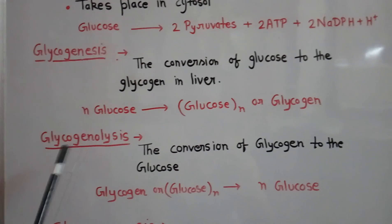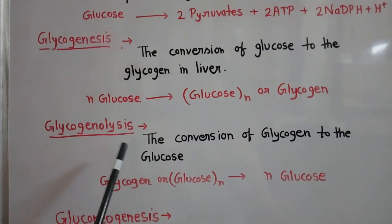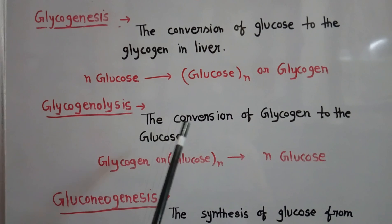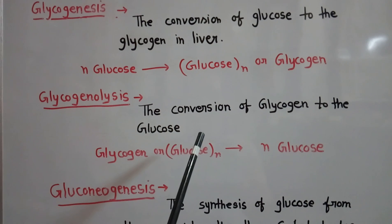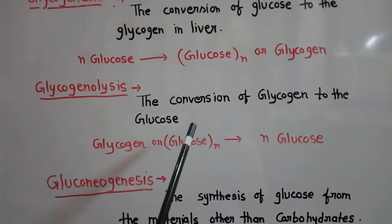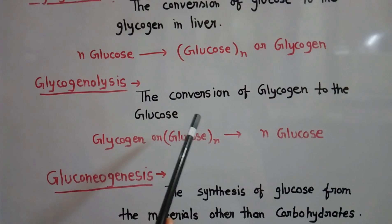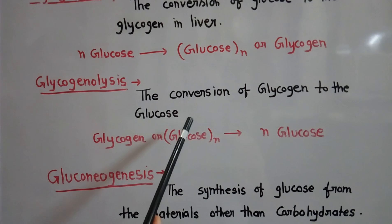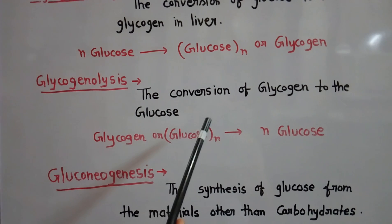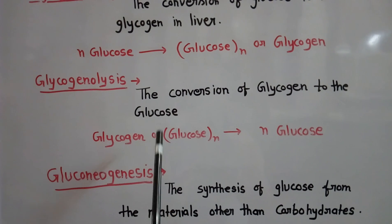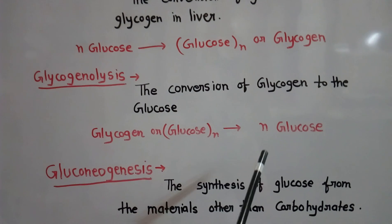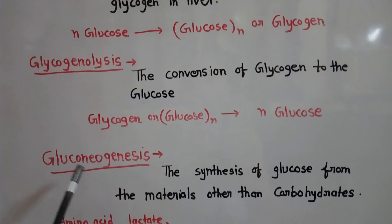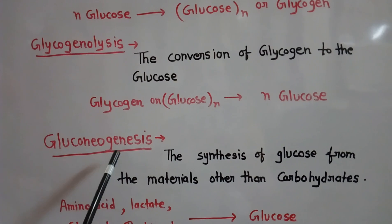The third process is glycogenolysis, which means the breakdown of glycogen. When there is more metabolic activity — such as exercise or fasting — and there is deficiency of glucose in the blood, the conversion of glycogen to glucose takes place. This process is also carried out by the liver. The conversion of glycogen to glucose molecules is called glycogenolysis.